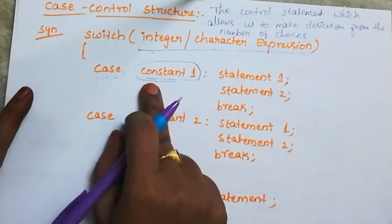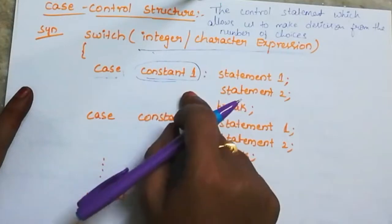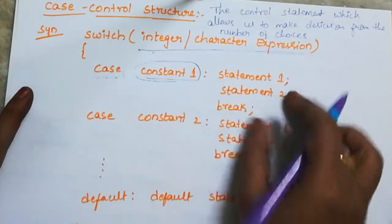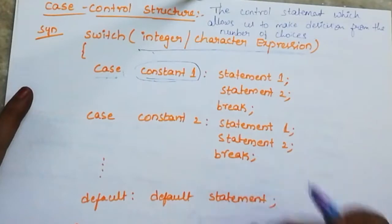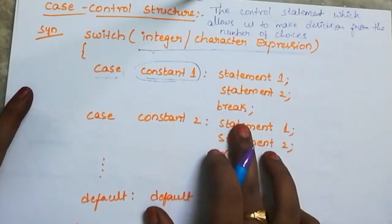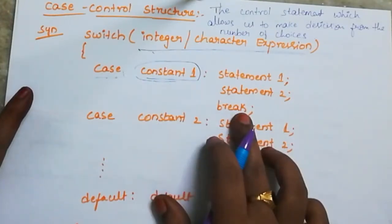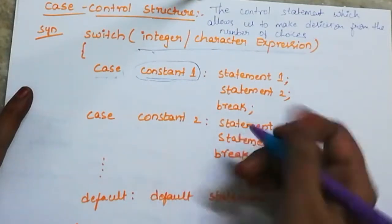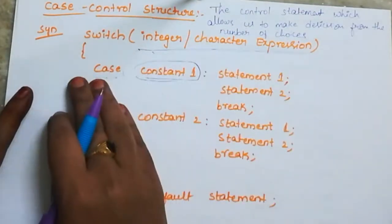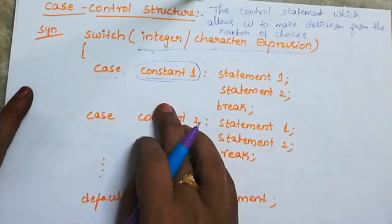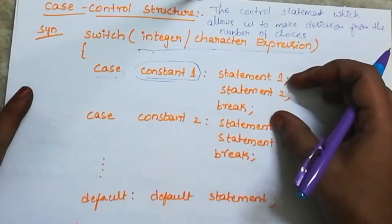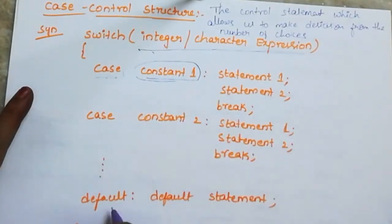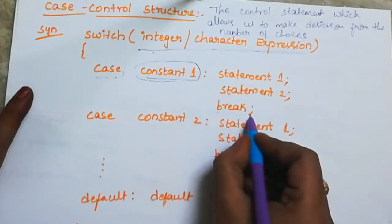After the case constant and colon, we write statement 1, statement 2 — any statements we need. Then we have the 'break' statement. Break is a jumping statement. When a match is found, that case is executed, and break is used to exit the switch so the remaining cases are skipped.